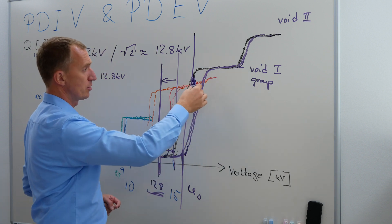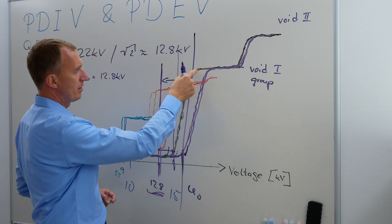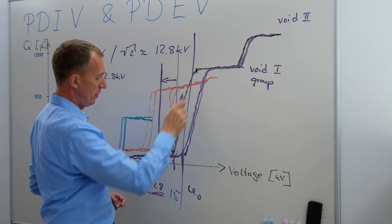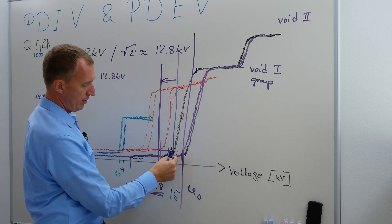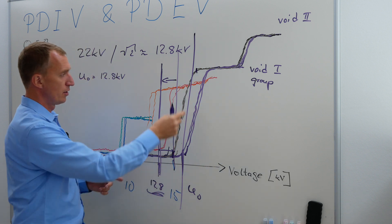But, if the voltage goes down, the voids could still be on. And please understand, right? This is actually the extinction voltage. The extinction voltage is here, where the void no longer shows any partial discharges, right?